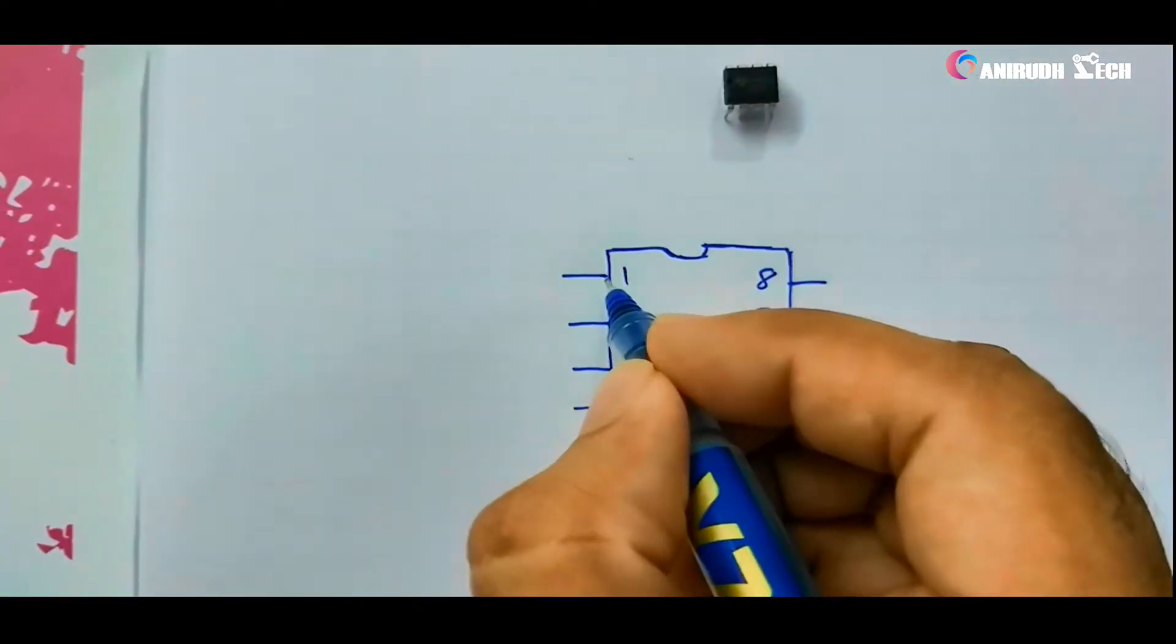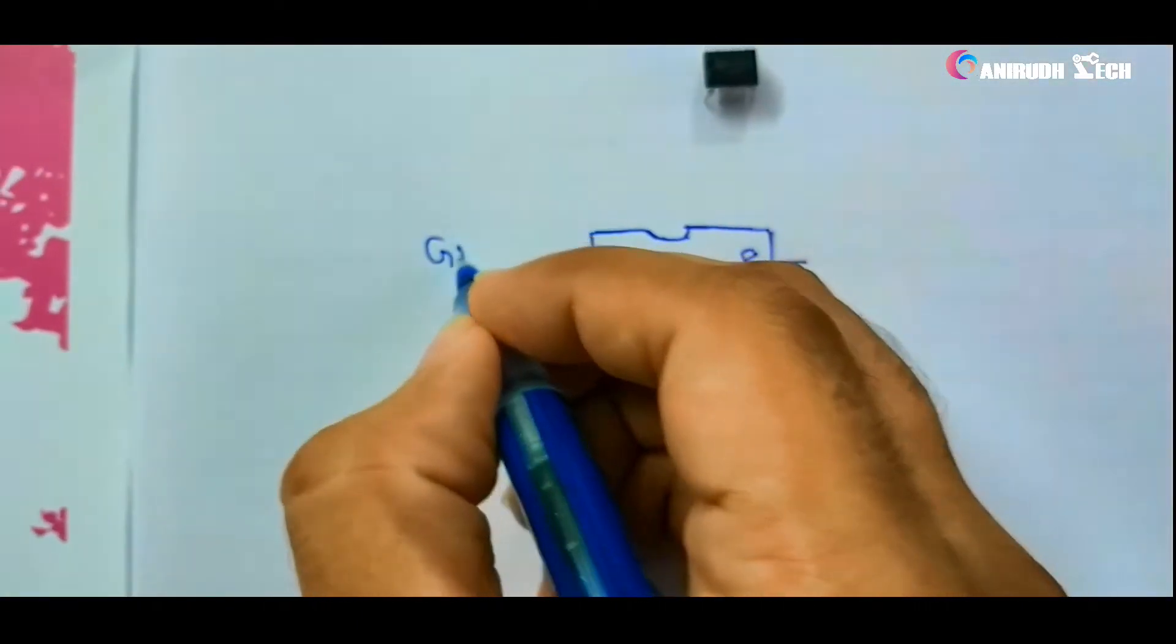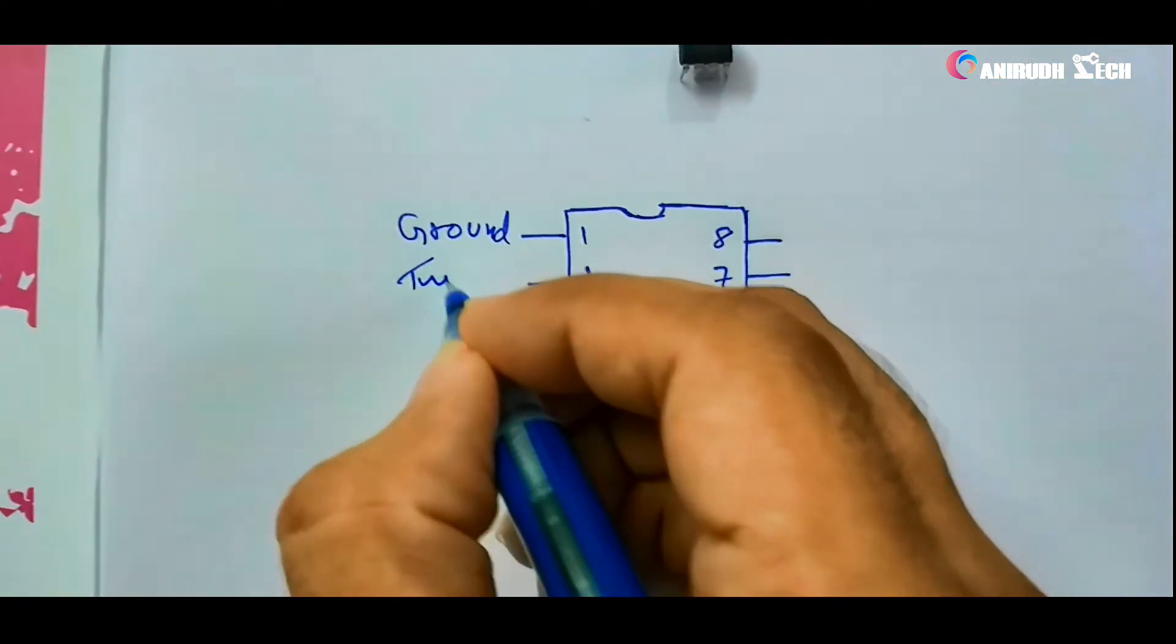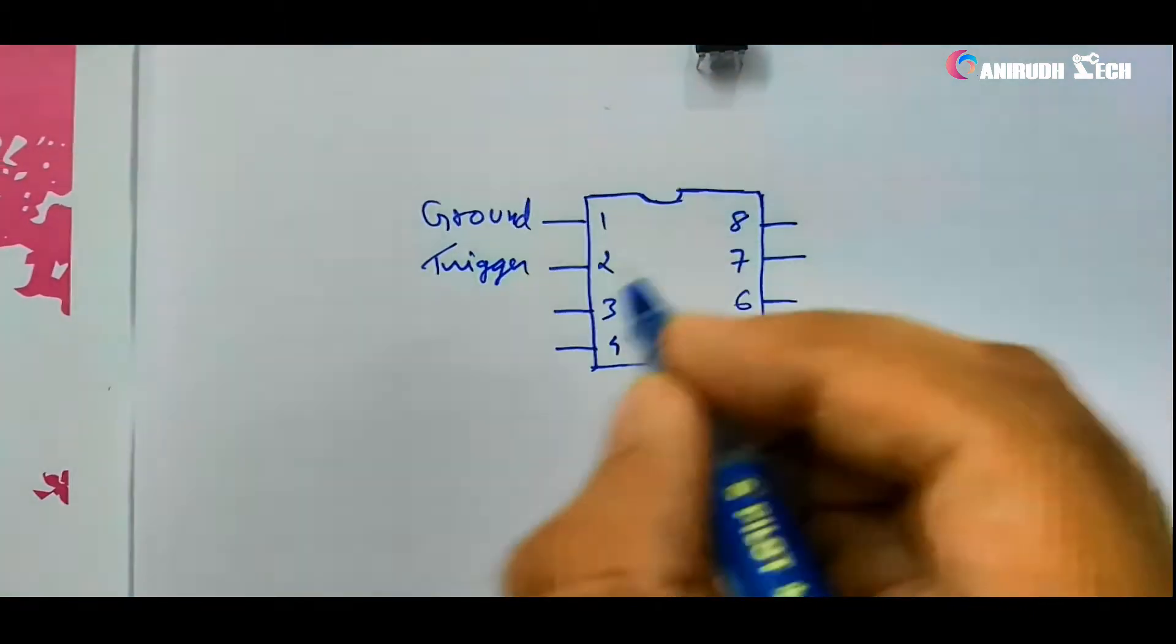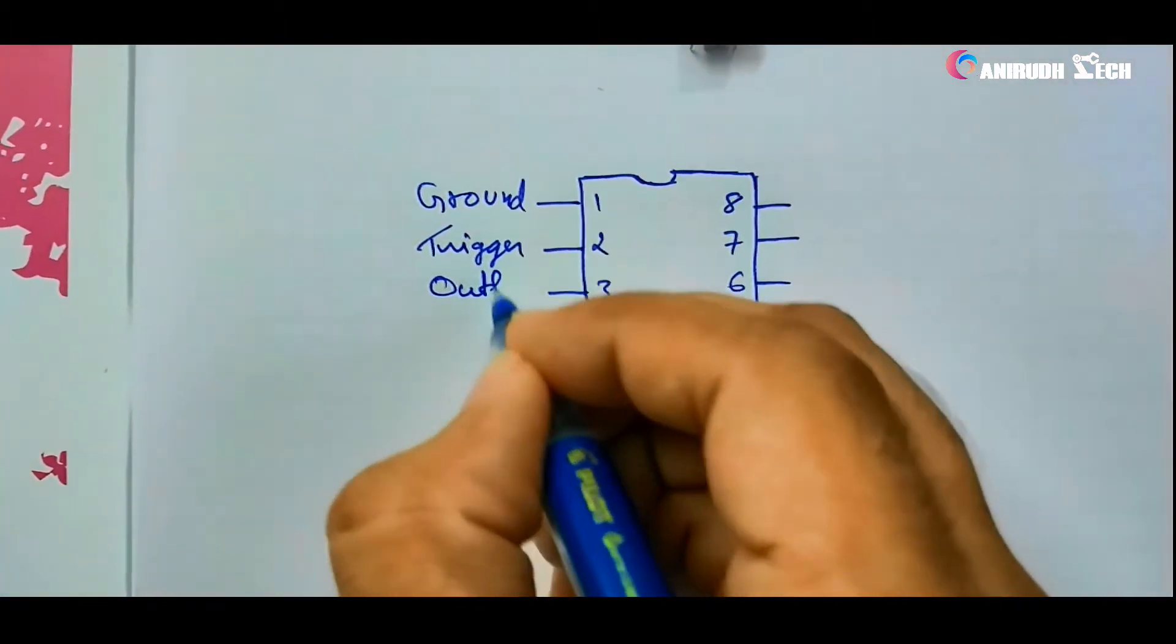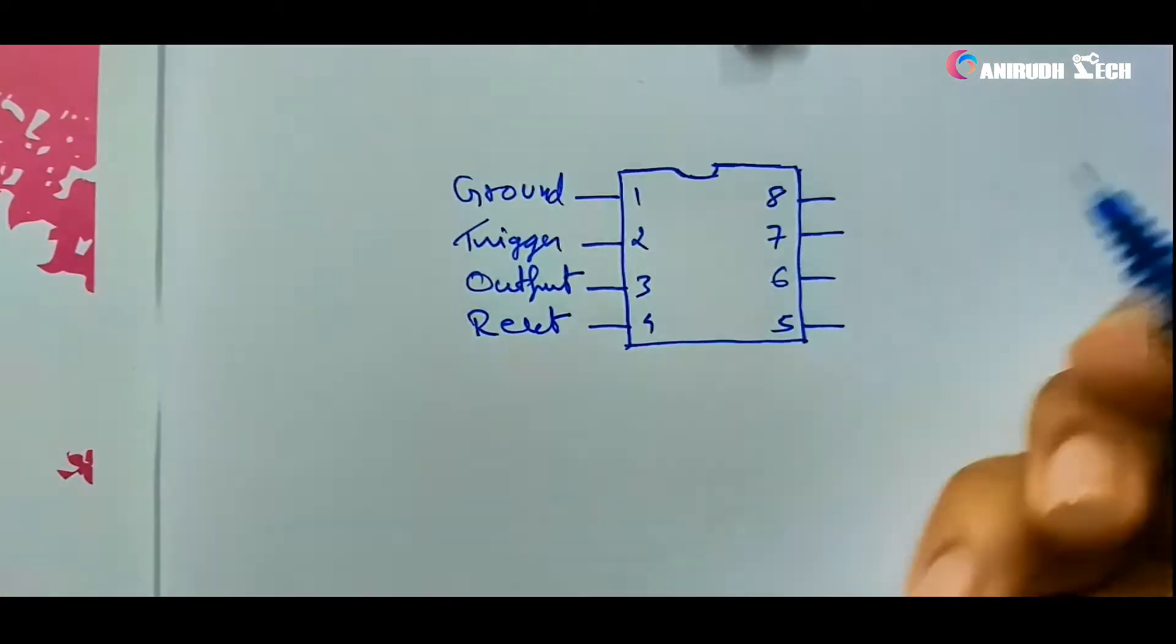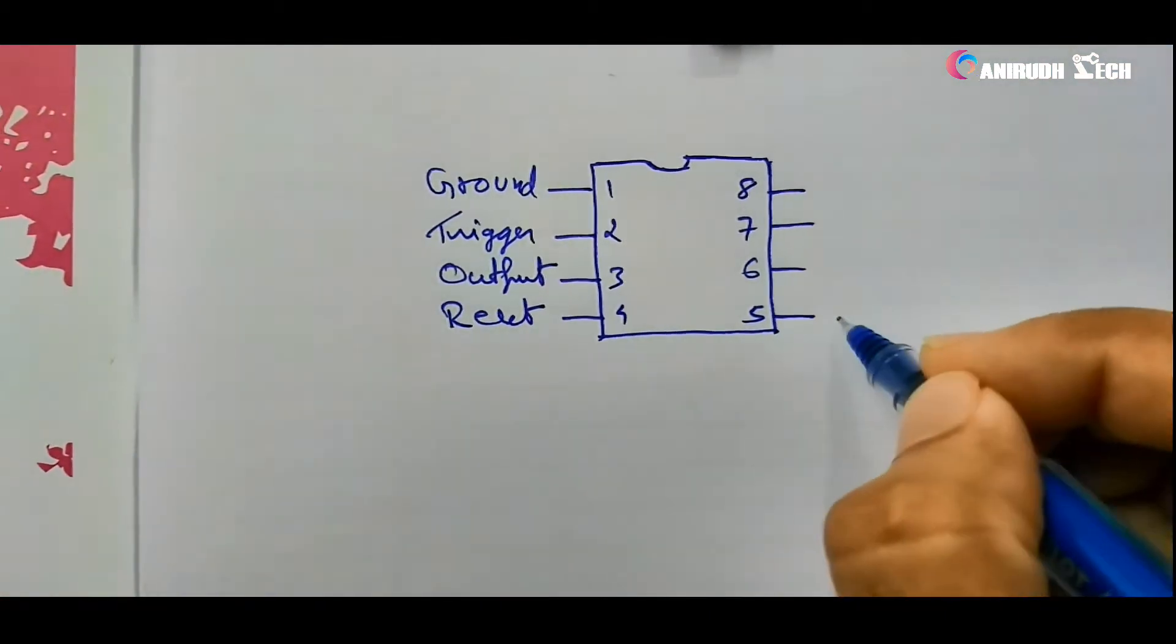Now the first pin is ground, and the second is trigger, and third one is output, and fourth one is reset, and fifth one is control voltage.